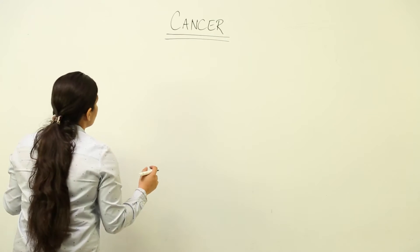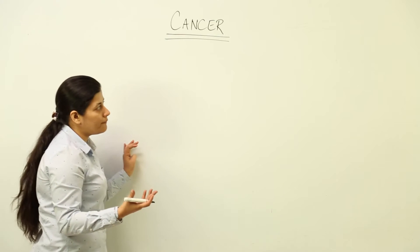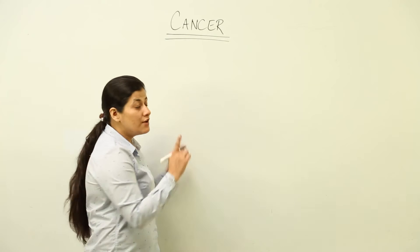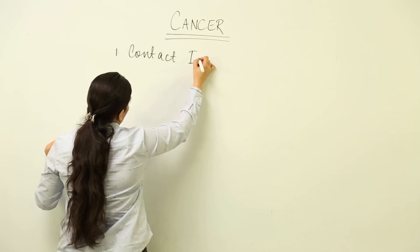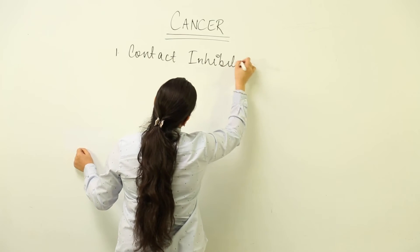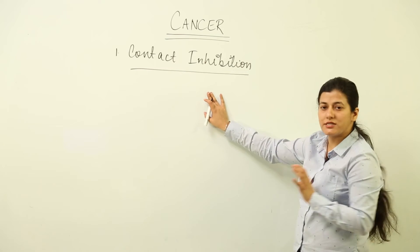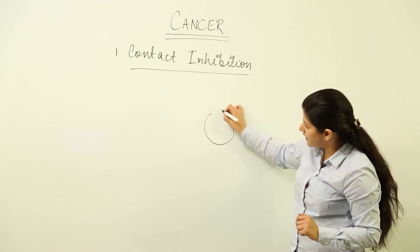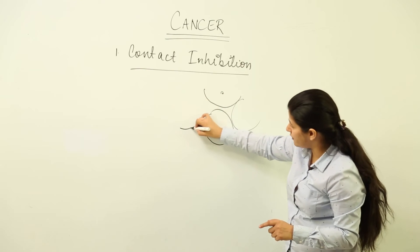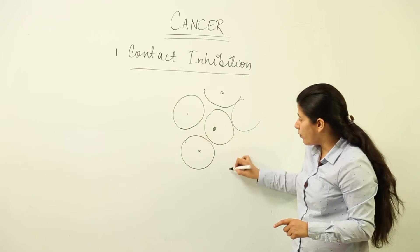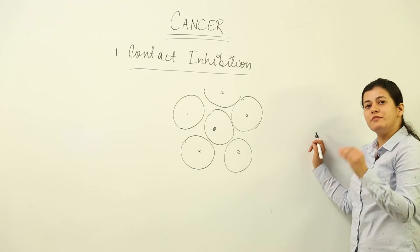Cancer is a diseased condition where cells do not stop growing. You might think that if growth is taking place the body would benefit, but that is not the case. The first thing to remember is that there is a condition in normal cells known as contact inhibition. Cancer cells do not have this contact inhibition. When a cell loses its ability of contact inhibition, it becomes cancerous.